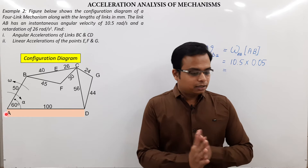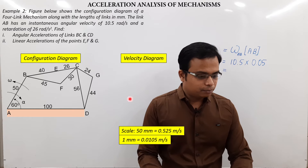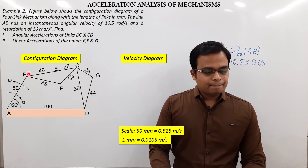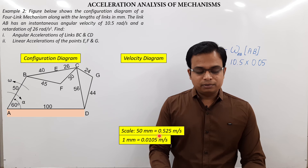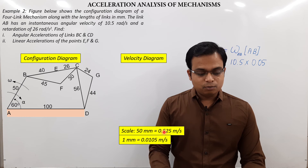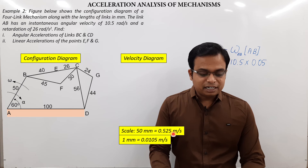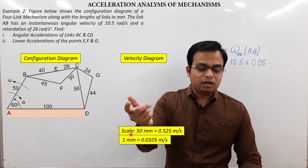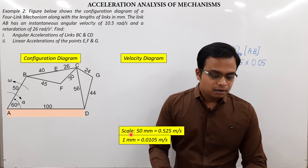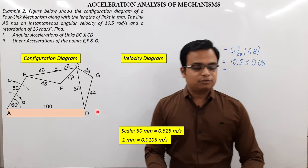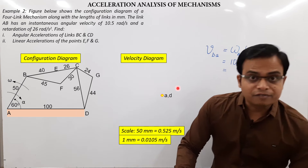Now we move to the main session. This velocity of 0.525 m/s is taken as 50 mm on our scale. So 1 mm equals 0.525 divided by 50. You can also express it as 1 m/s equals 50 divided by 0.525 millimeters. Now, A and D are the two fixed points — let's fix them and begin the velocity diagram.